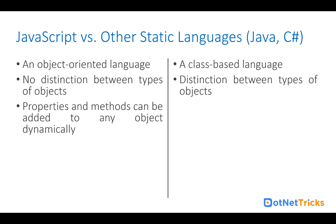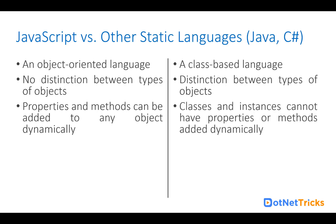In JavaScript, properties and methods can be added to any object dynamically. If you have an object and want to add extra properties and methods later on after creating the object, you can do it. But in static languages it is not possible — classes and instances cannot have properties or methods added dynamically. Whatever properties and methods exist within a Java or C# class, you can only access those; you cannot add properties and methods on the fly based on requirement.